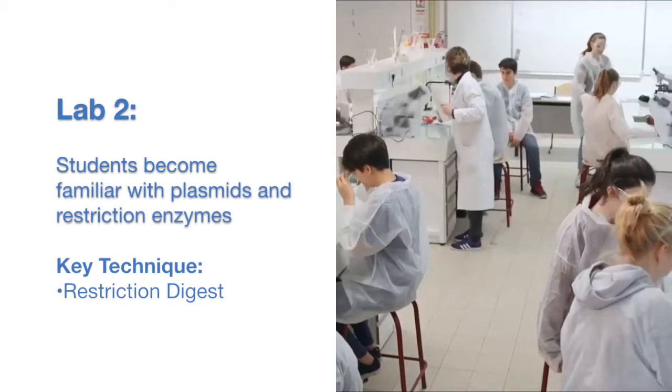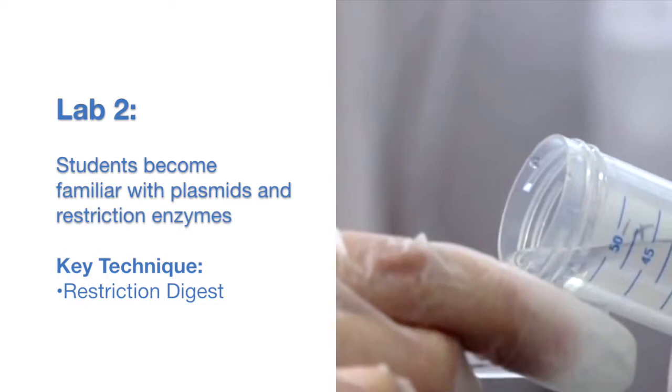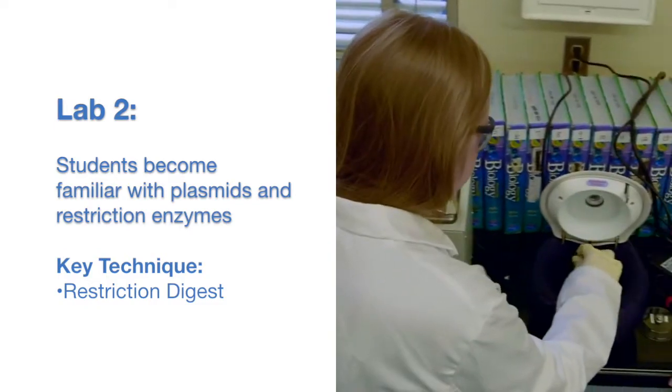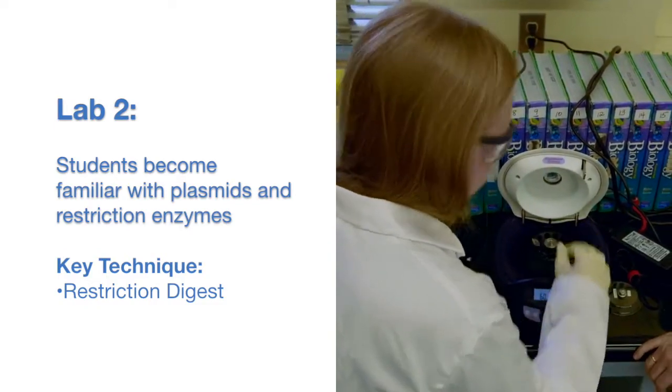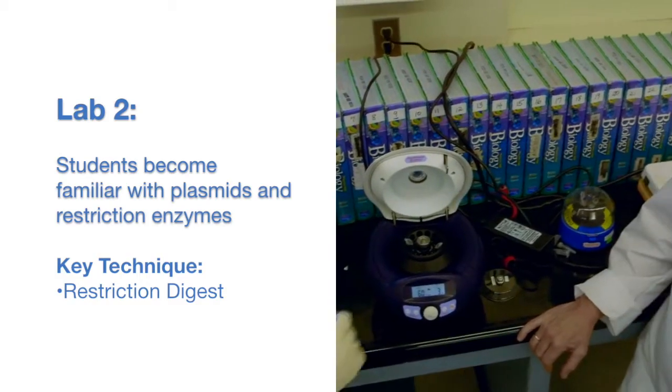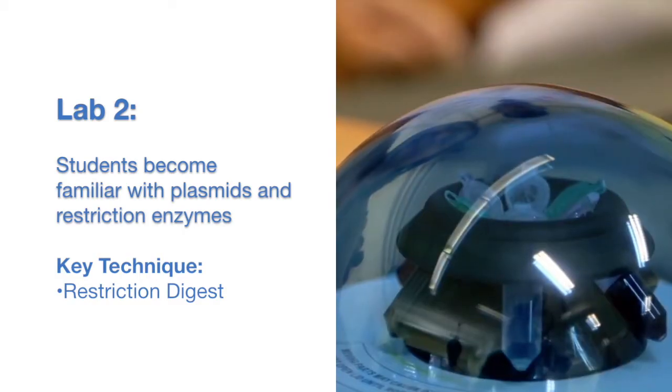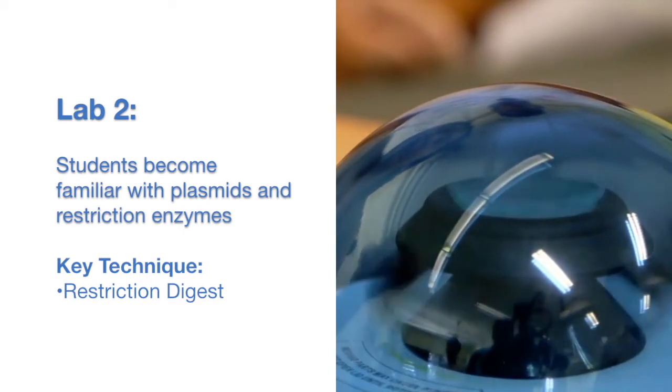Next, students become familiar with both plasmids and restriction enzymes. In lab two, they perform a restriction digest on two plasmids to isolate the gene of interest. Components of these plasmids will be used later to create a recombinant plasmid.